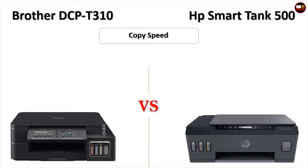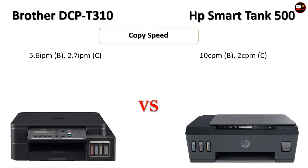Copy Speed — Brother DCP T310: 5.6 IPM Black, 2.7 IPM Color. HP Smart Tank 500: 10 CPM Black, 2 CPM Color.